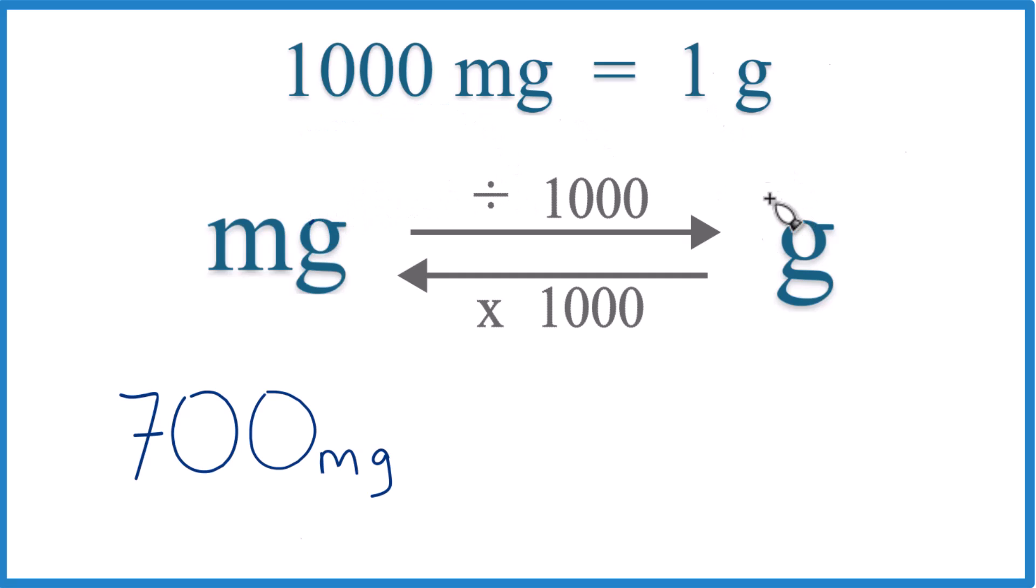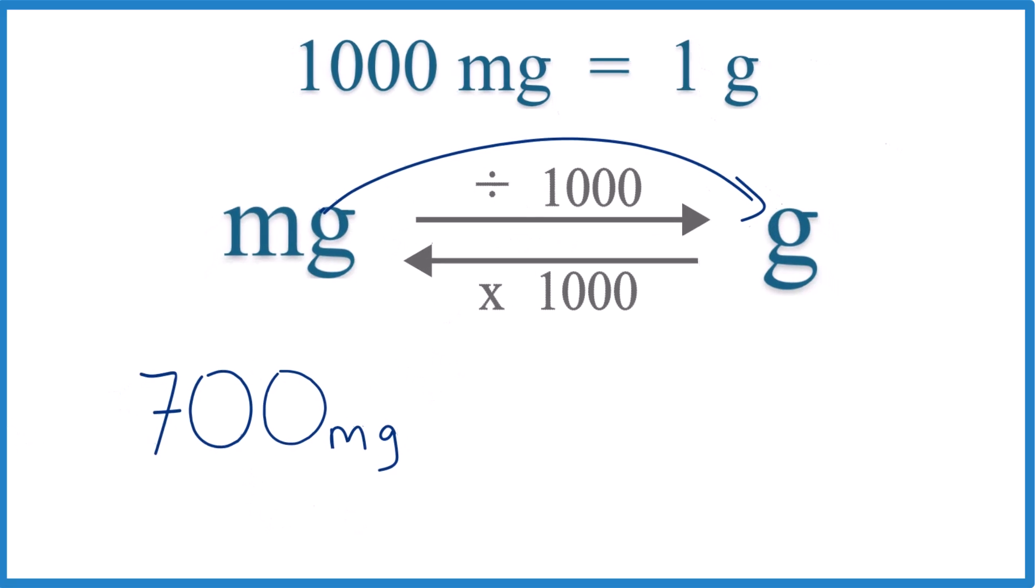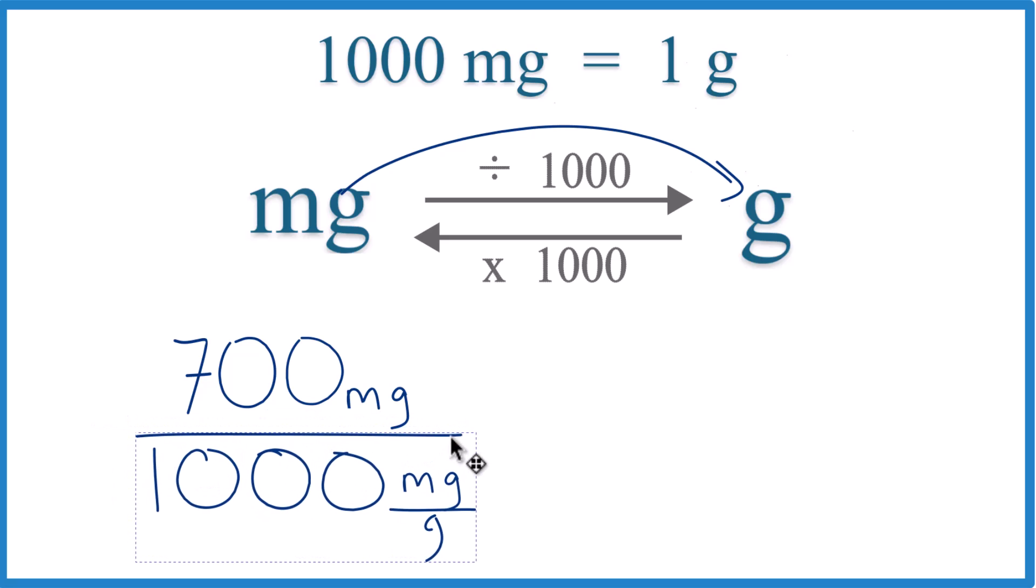Here we have 700 milligrams we want to get to grams. We're going to divide by a thousand like this, and note that we're just taking 700 and dividing it by a thousand to get our grams.